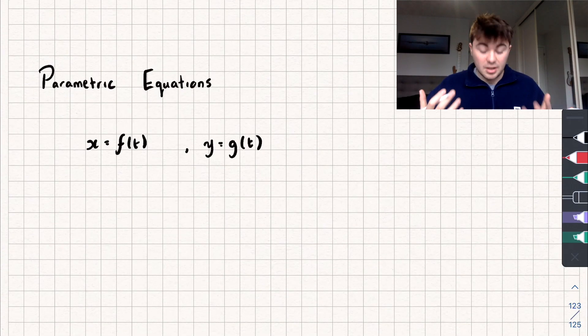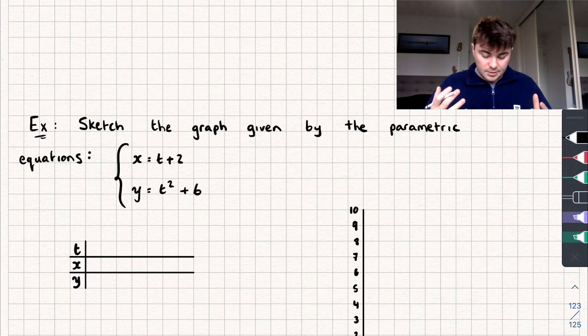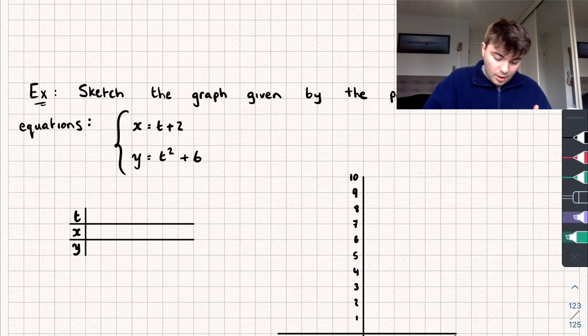I think the best way to look at this is with an example. So we need to sketch the graph given by the parametric equations x equals t plus 2 and y equals t squared plus 6. The way we're going to sketch a curve given by parametric equations is with a table like this one here.